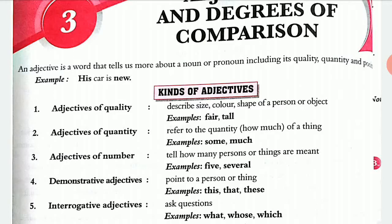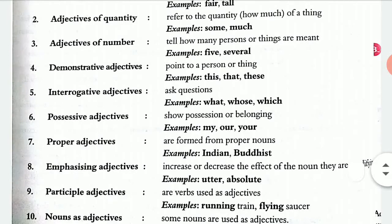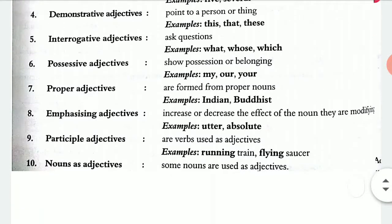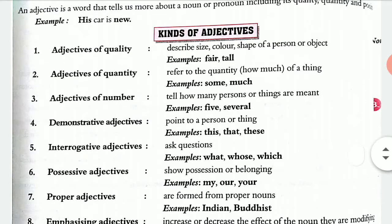In class 8, we will be reading about 10 different kinds of adjectives: adjectives of quality, quantity, number, demonstrative adjectives, interrogative adjectives, possessive adjectives, proper adjectives, emphasizing adjectives, participle adjectives, and nouns as adjectives. Let's start with the first kind — adjective of quality.